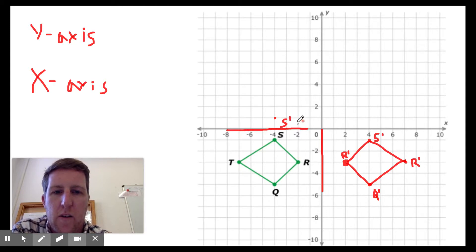R is going to be three squares away. So we have to do one, two, three. Q is going to be one, two, three, four, five squares away. One, two, three, four, five. So it's up here.